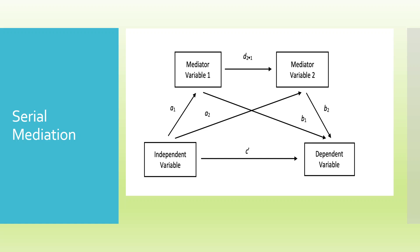Mediation can be serial or parallel. In serial mediation, the independent variable affects mediator 1 and mediator 2 sequentially before reaching the dependent variable. For example: the child can approach the father directly (direct path); approach the mother who convinces the father (path A1, B1); approach the grandmother who convinces the father (path A2, B2); or approach the mother, who convinces the grandmother, who then convinces the father (path A1, D2, B2). This sequential chain is known as serial mediation.